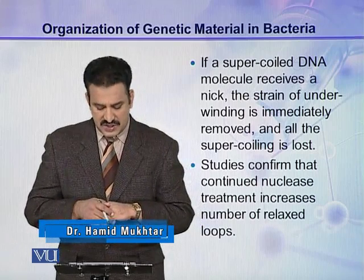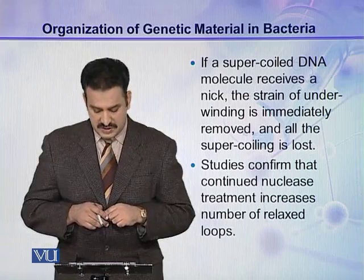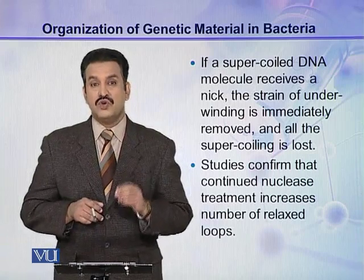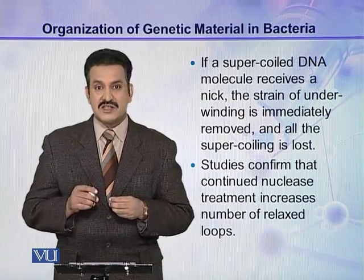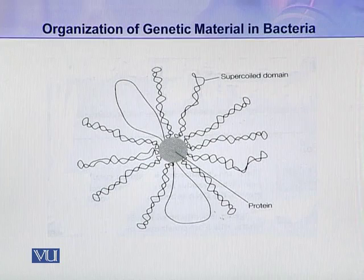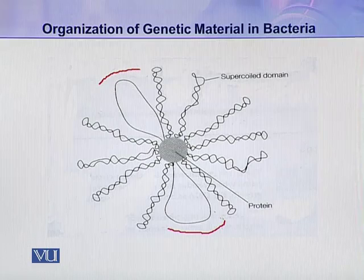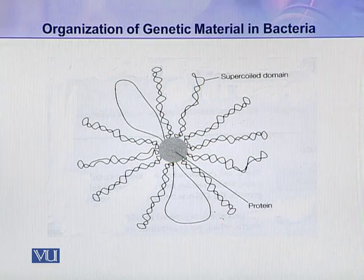Studies have also confirmed that if we continuously treat the chromatin with nucleases, it will increase the number of relaxed loops. This increase is due to the nicks introduced by the nucleases. Here you can see a clearer picture of the chromatin — this is a relaxed loop, and these are supercoiled loops. All these loops are attached with this protein core.